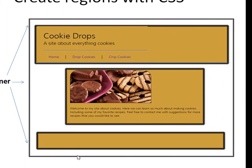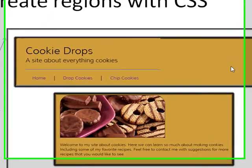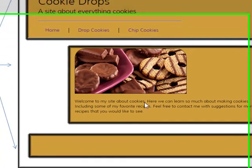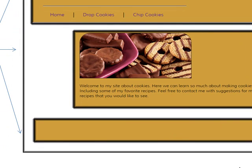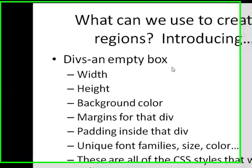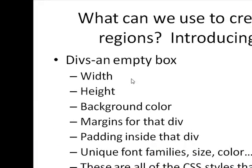We're going to create all of these regions — these empty boxes — and we're going to have all of our content inside of them. We're going to do this with what's called a div. A div is essentially just an empty box, but there are attributes we can add to a div such as width, height, background color, margins, and padding.